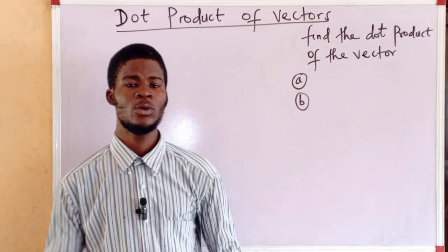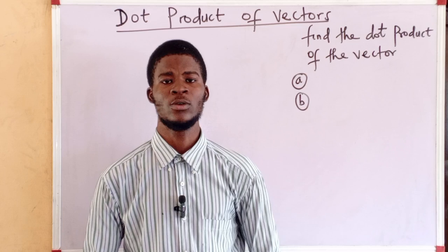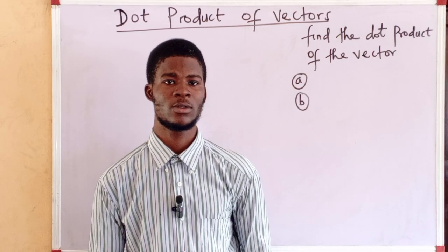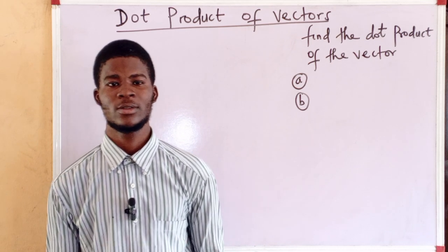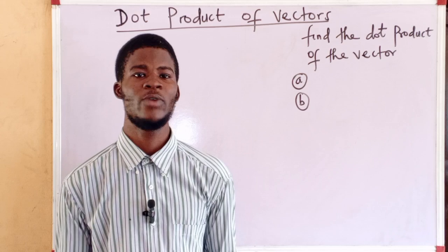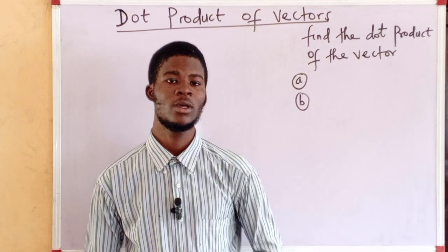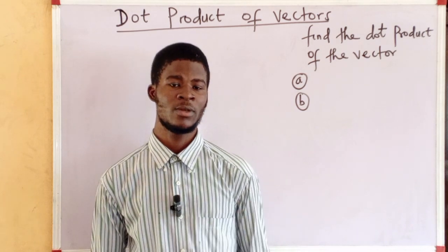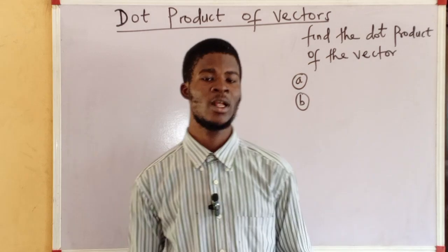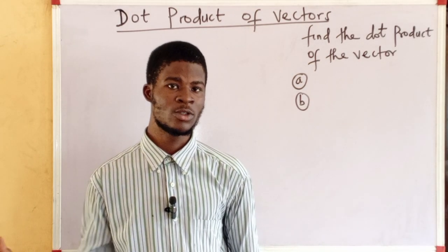Welcome back everyone to this video. Here we are going to talk about multiplication of vectors, and in particular the dot product of vectors, also called the scalar product. In math there are two kinds of vector product: the scalar or dot product, and the vector product or the cross product.